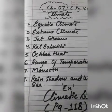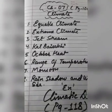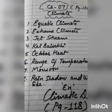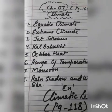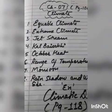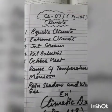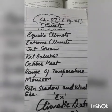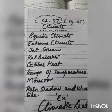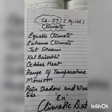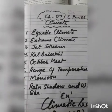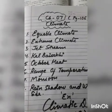Next is October heat — it is the condition of high temperatures and humidity due to which the weather becomes very oppressive. Oppressive means hard to bear. The next term is range of temperature, which means the difference between the maximum and the minimum temperature recorded.